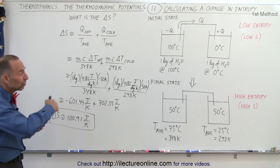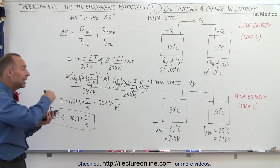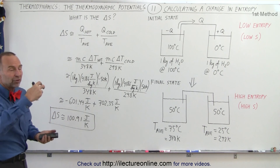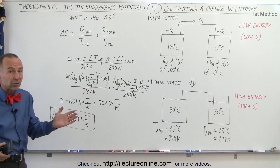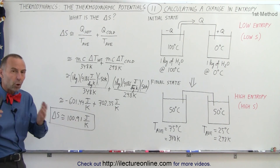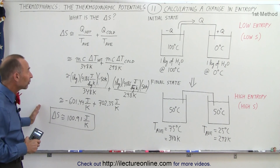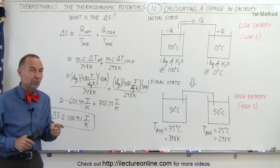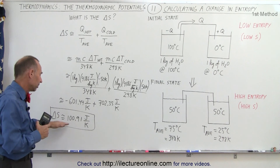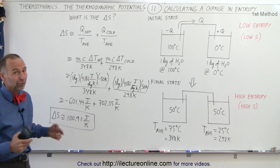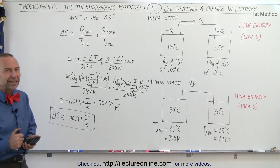So now we understand that when there's heat exchange, two things happen: entropy will always go up, and heat will be extracted from where it's hot and dumped into where it's cold. Whenever that happens anywhere in the universe, entropy will always go up when heat is exchanged. We've learned how to do this using the average temperature; in the next video we'll do it using integration to get the exact value, which will be very close to what we got here.